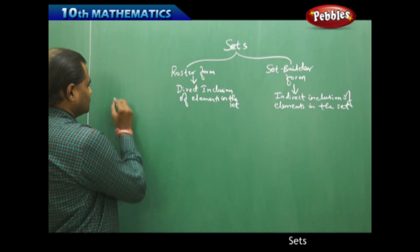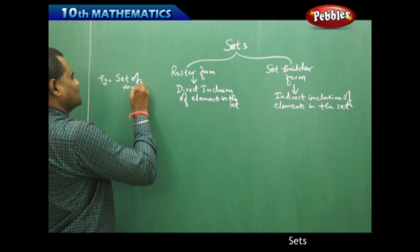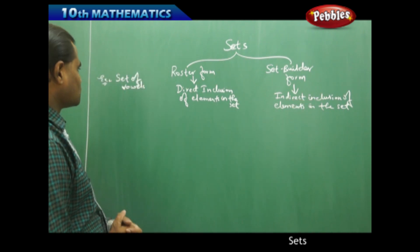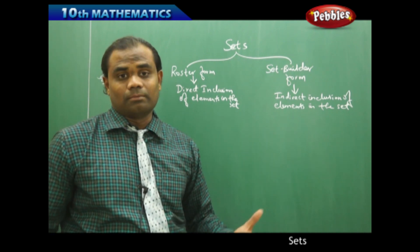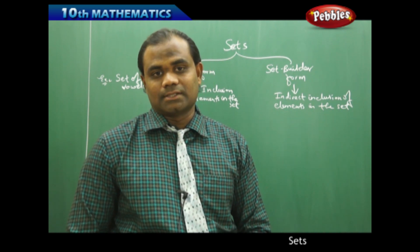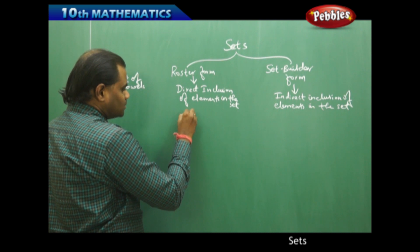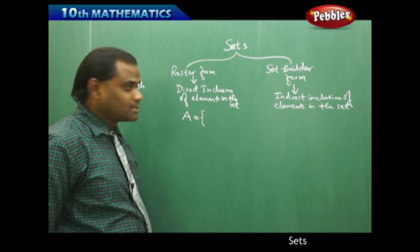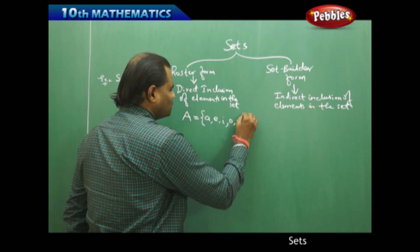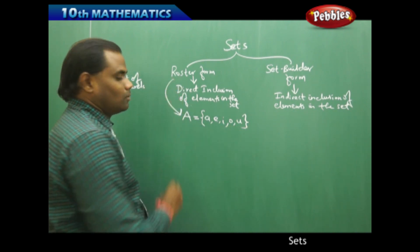I'll take the situation of the set of vowels, which I want to write in both roster form and set builder form. In the roster form, the set of vowels — which we know from English are A, E, I, O, U, the five alphabets called vowels — can be written directly. So the roster form of the set of vowels, which I generally denote as A, lists all vowels directly: {A, E, I, O, U}. This is the roster form of vowels.